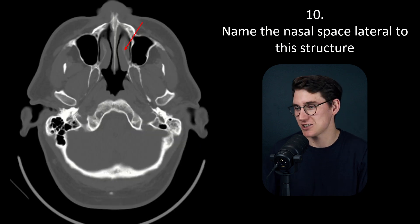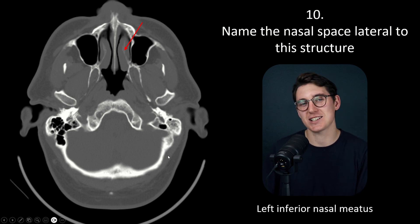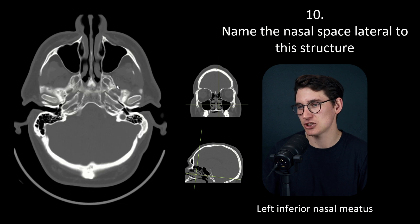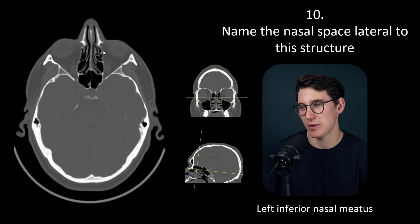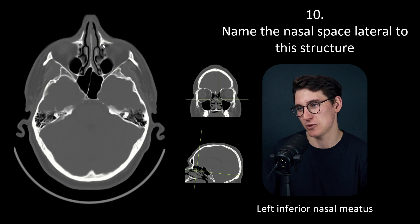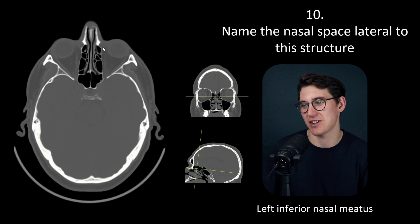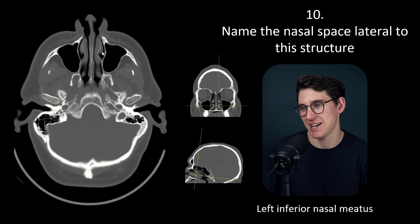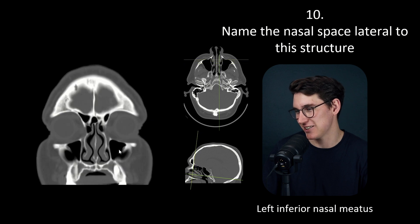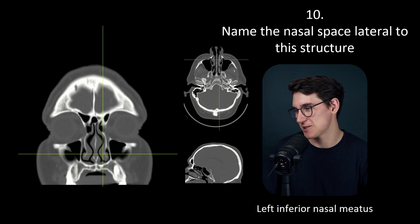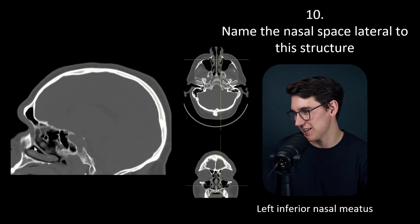The inferior nasal meatus receives fluid from the nasolacrimal duct. To identify the nasolacrimal duct: go to the orbit, look medially where the lacrimal bone and frontal projection of the maxilla meet — you'll see a circle forming, which is the nasolacrimal canal containing the nasolacrimal duct. It connects the lacrimal sac on the medial aspect of the eye down towards the inferior nasal meatus. You can see this on the coronal plane: here's the lacrimal sac, here's the nasolacrimal duct going into the inferior nasal meatus, also beautifully illustrated on the sagittal plane.